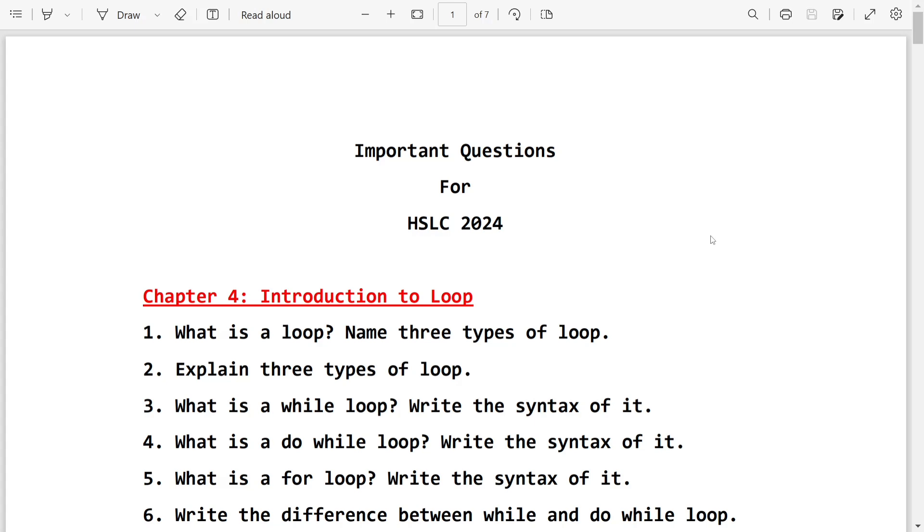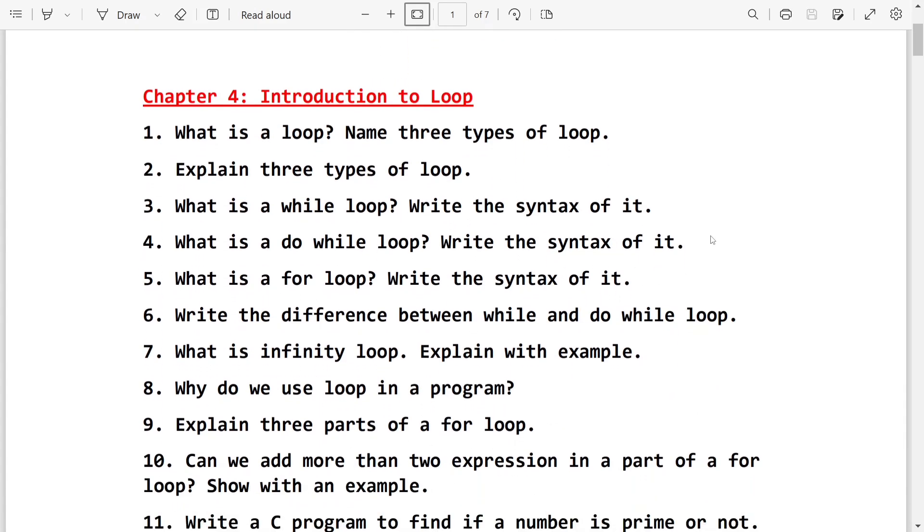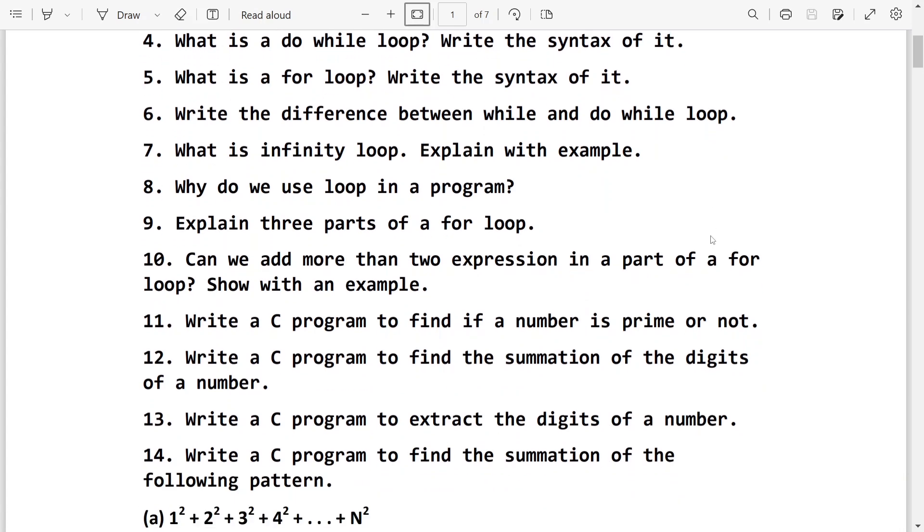Here are some questions which you can learn by heart for your examination. From chapter 4 loop, here you will see mostly definition of loop, different types of loops, its types, definitions like while loop, do while loop, for loop, difference between while do while, entry control, exit control, then parts of for loop.